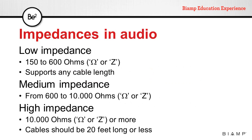We can divide audio gear into three large groups depending on their impedance: low impedance, medium impedance, and high impedance. Low impedance usually ranges between 150 and 600 ohms — this type of device will support any cable length. Medium impedance ranges from 600 ohms to 10 kilohms (10,000 ohms). High impedance is anything above 10,000 ohms, and with high impedance devices we should not use cables longer than 20 feet, because longer distances will increase the impedance and will cut high frequencies.